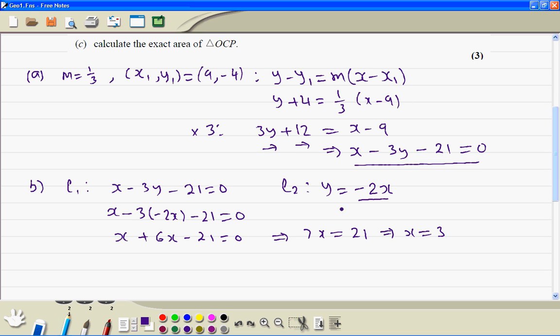Then we substitute into this equation. y is equal to minus 2 times 3 which is minus 6. So the coordinates of P are 3 and minus 6.